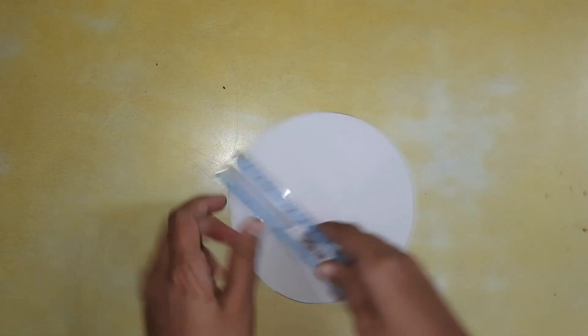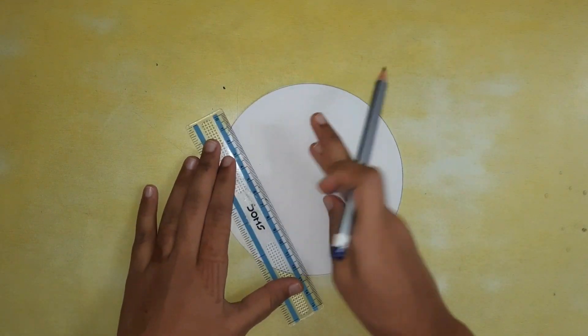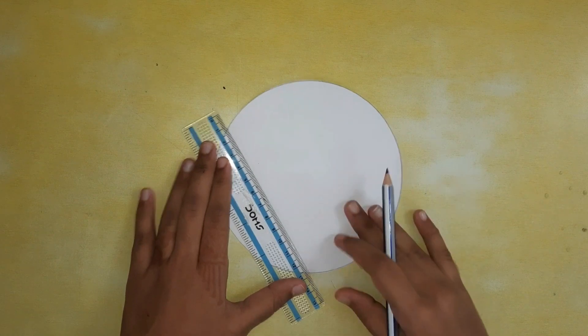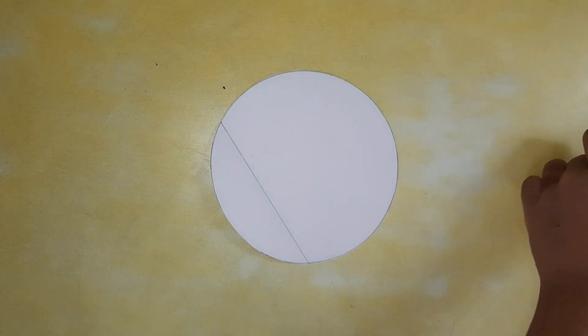Now we are going to trace this with a pencil. Children, this line here is known as the chord of the circle.